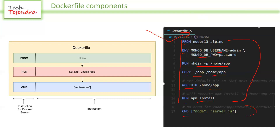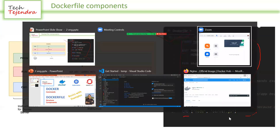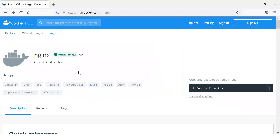In our last example we saw how to get an image from the Docker Hub registry. Let me continue with a new example — this time we'll create our own web application and build a Docker image on top of the nginx base image. Let me go to the nginx official image on Docker Hub for better understanding.